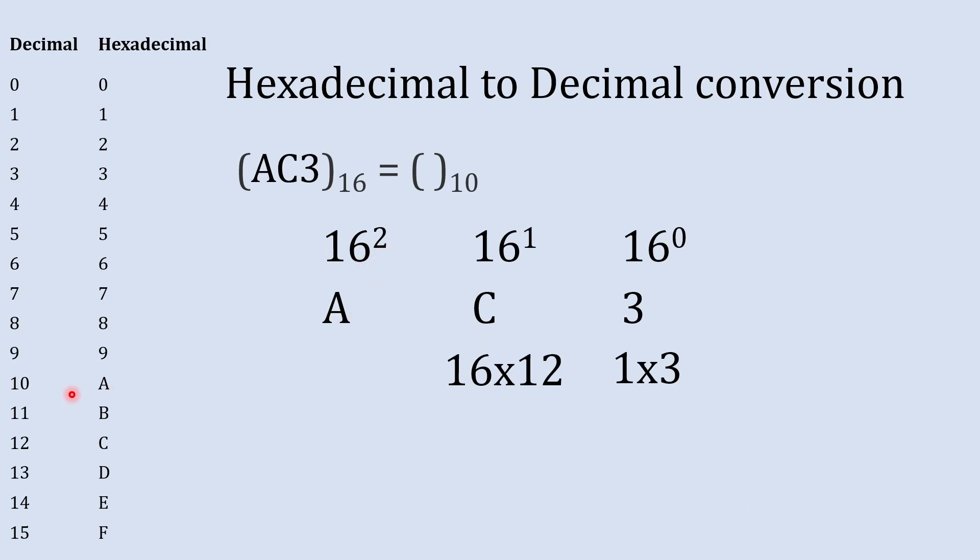Now what is the decimal equivalent to A? That is 10. So we will use 256 into 10 and now we are going to add these numbers together. So 2560 plus 192 plus 3 and that gives us 2755.